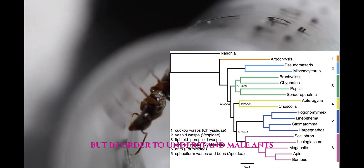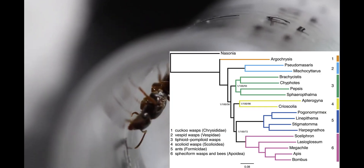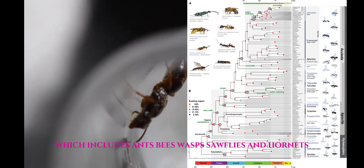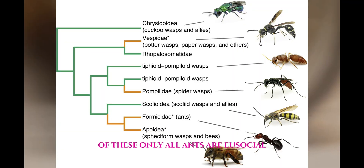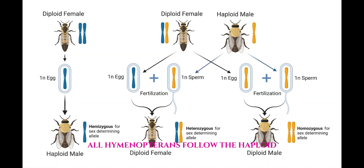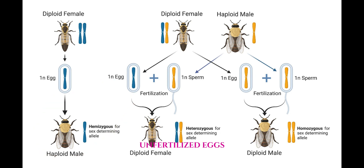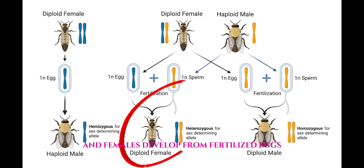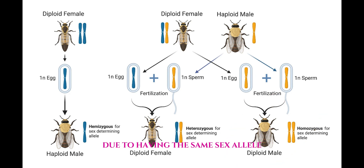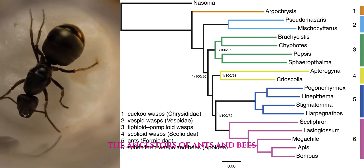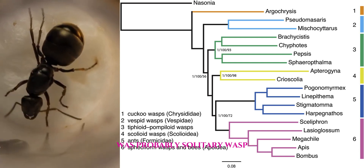But in order to understand male ants, we need to take a broader look at their cousins. Ants are in the order Hymenoptera, which includes ants, bees, wasps, sawflies, and horntails. Of these, only all ants are eusocial. All hymenopterans follow the haploid-diploidy sex determination system, where males develop from haploid, unfertilized eggs, and females develop from fertilized eggs. However, diploid males can occur due to having the same sex allele, and diploid males are usually infertile.